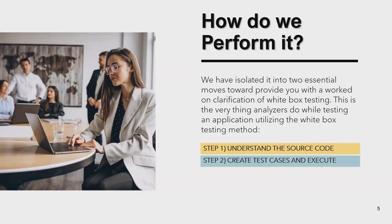There are two methods to perform white box testing: first, understand the source code, and second, create test cases and execute them. If we have code with 5,000 lines, we first understand which logic works for which functionality, then remove redundant data if available. After understanding the source code, we can easily test the application. Just looking at the top level will waste a lot of time, but having a complete structural understanding makes testing much easier.